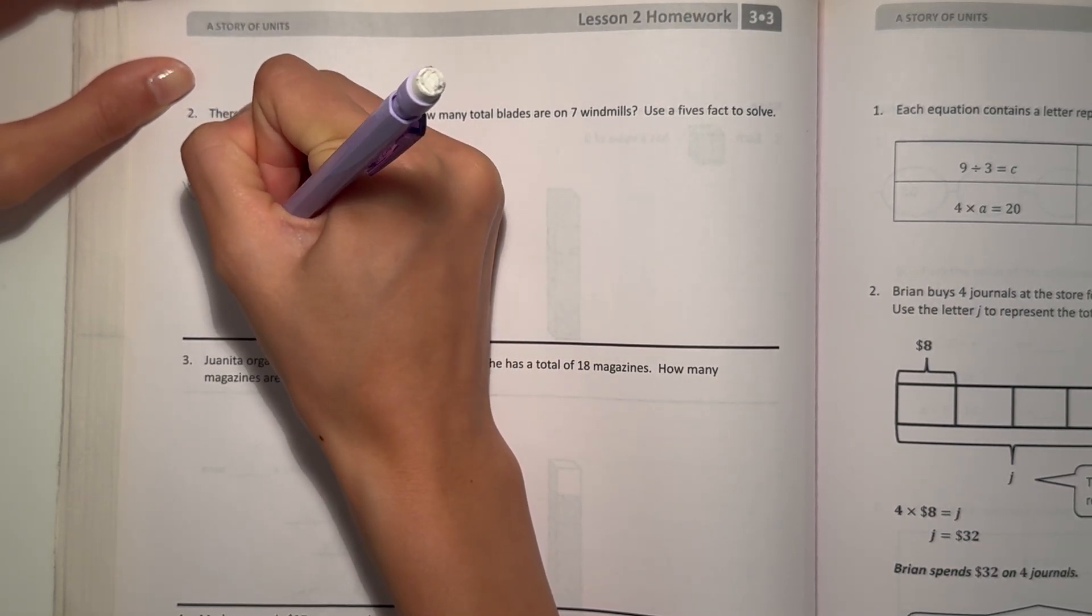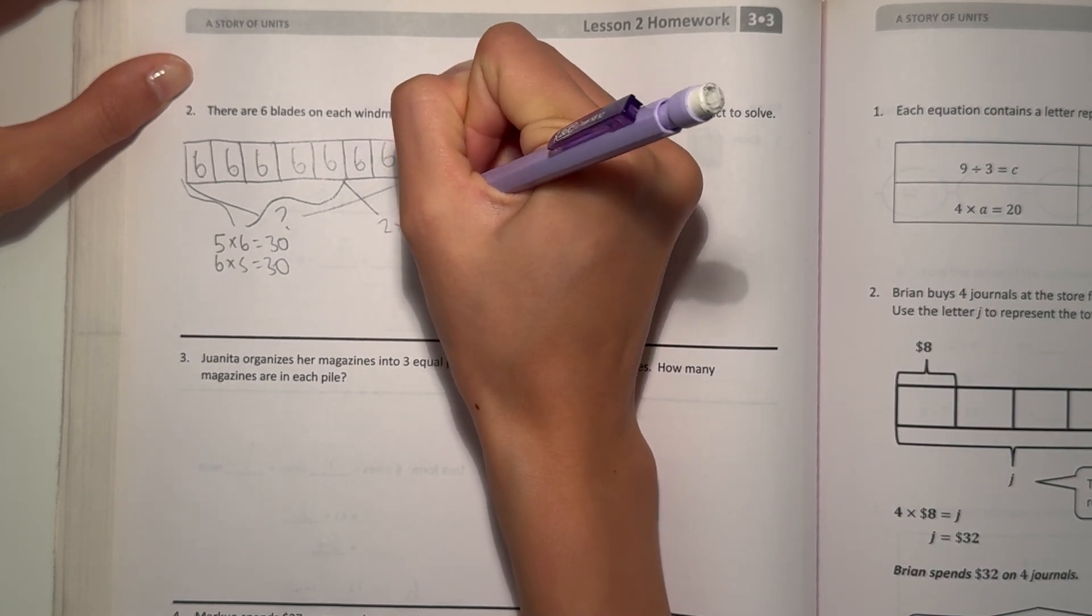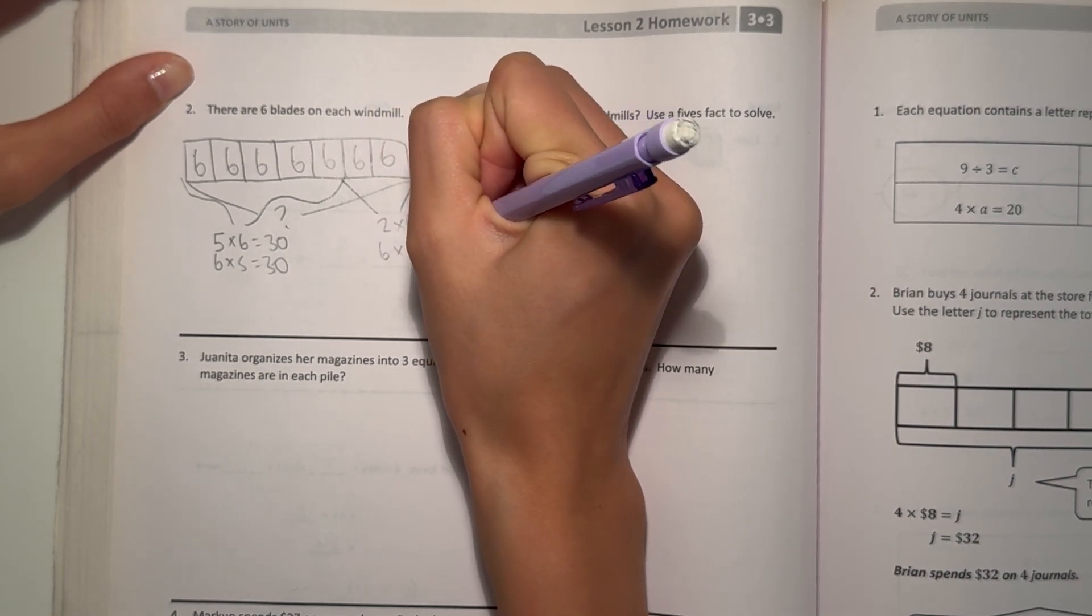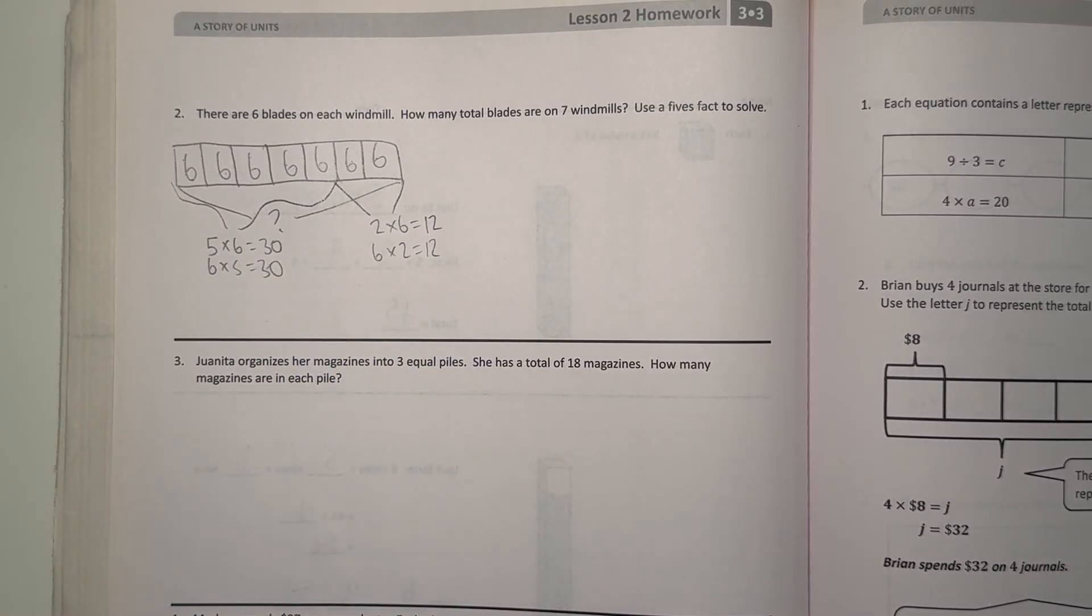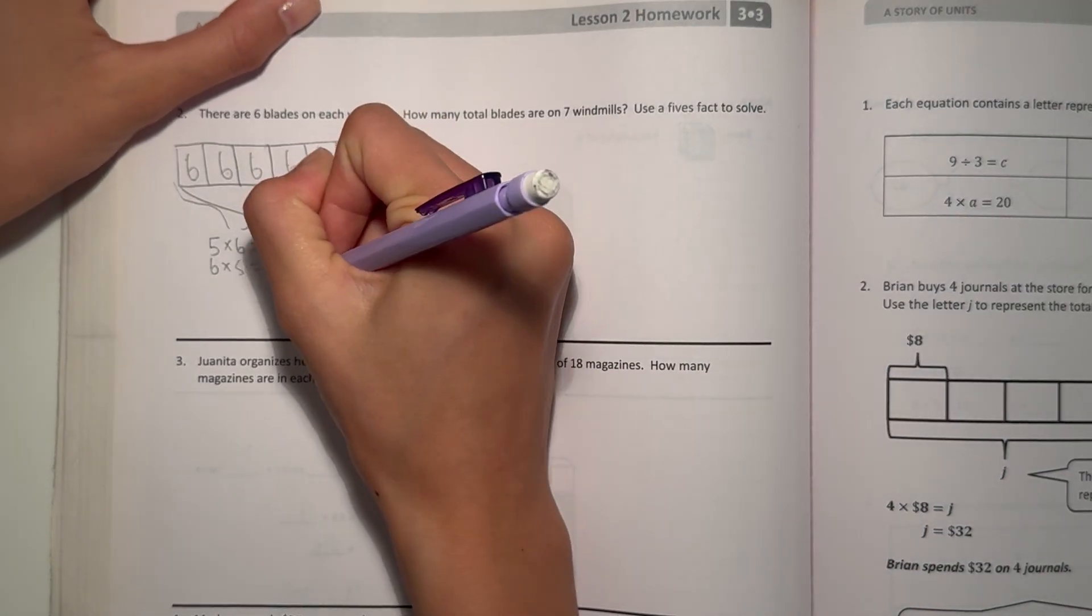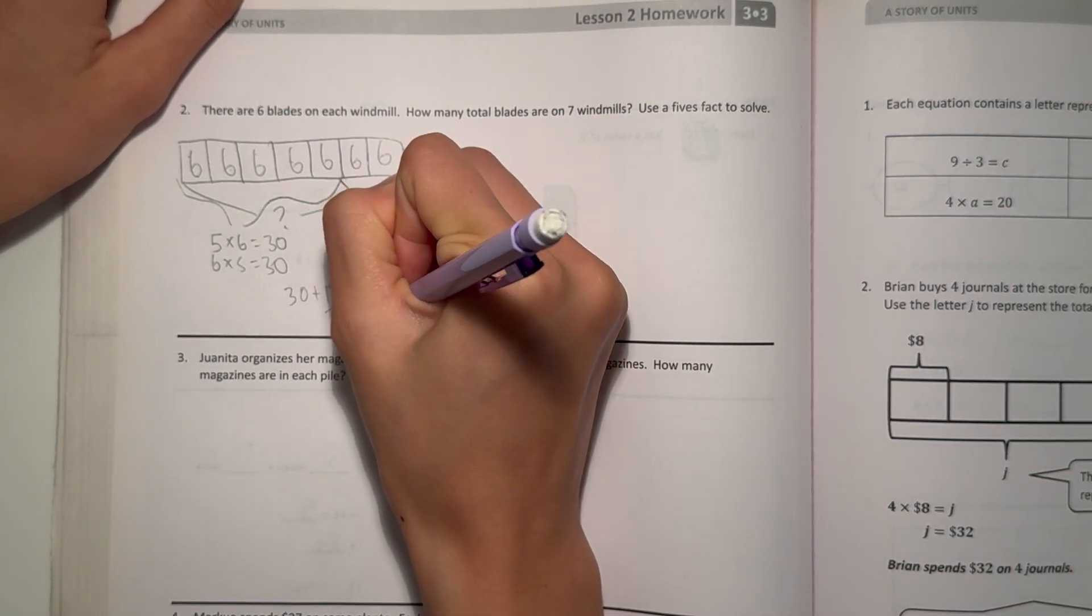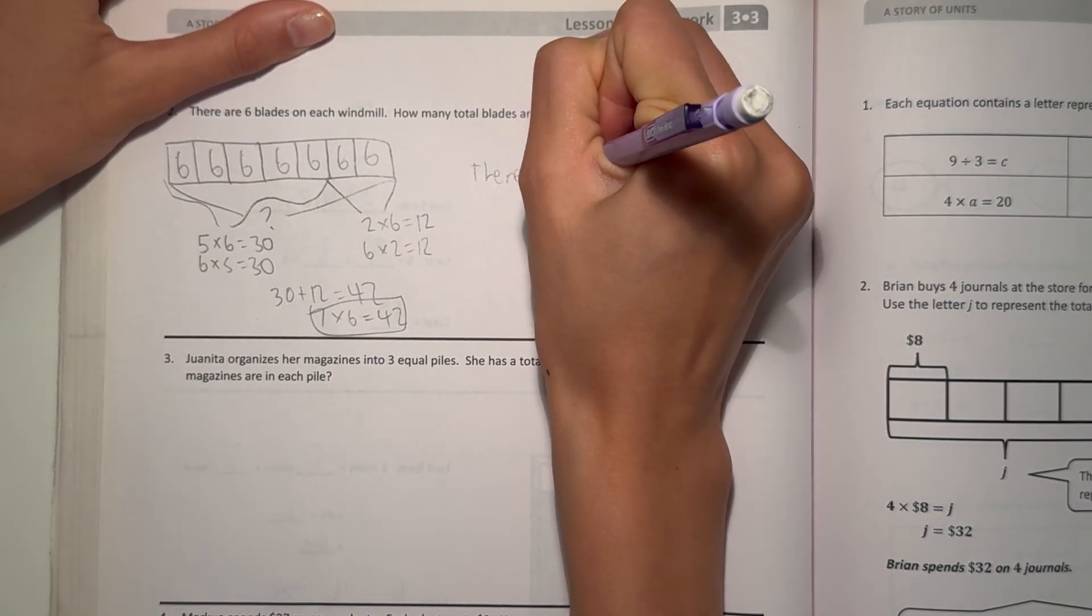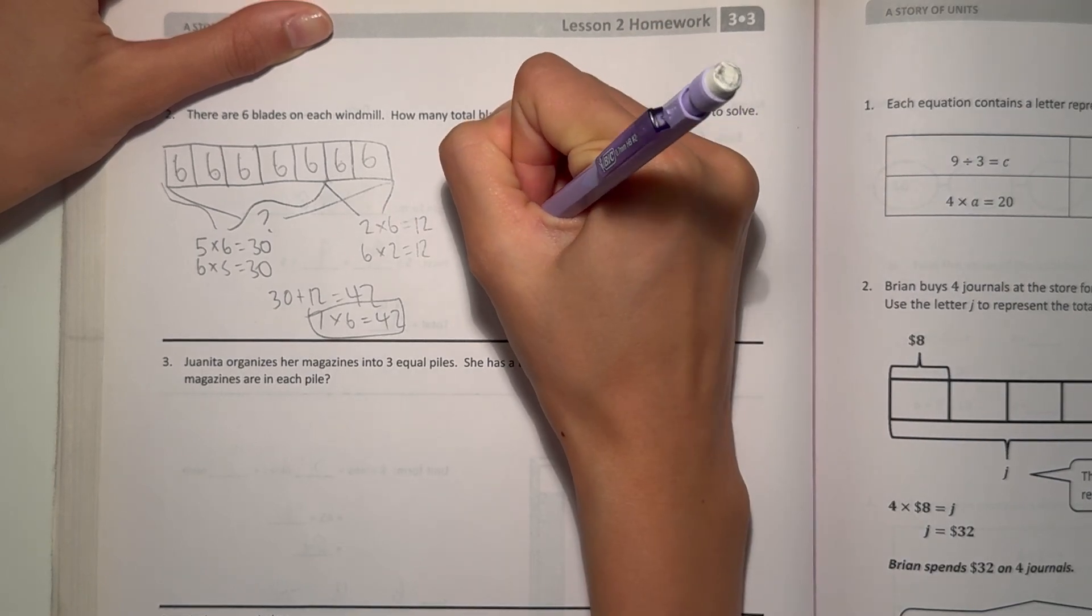But if we swap around, we can write 6 times 5 is also 30. And then here we have 2 left. 2 times 6 is 12. And then 6 times 2 is also 12. So we're just switching it around to show that we know that when we swap numbers in a multiplication sentence, we're multiplying the same things, then it's still equal. So now we have 30 and 12. So we add 30 plus 12, then we have 42.